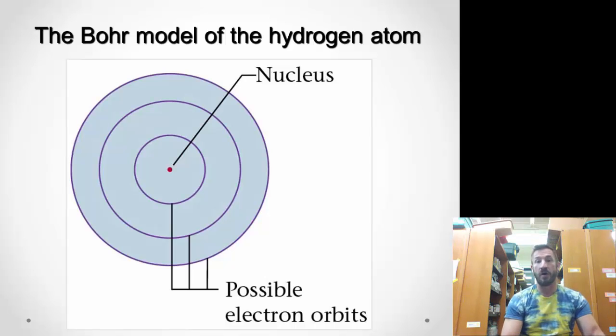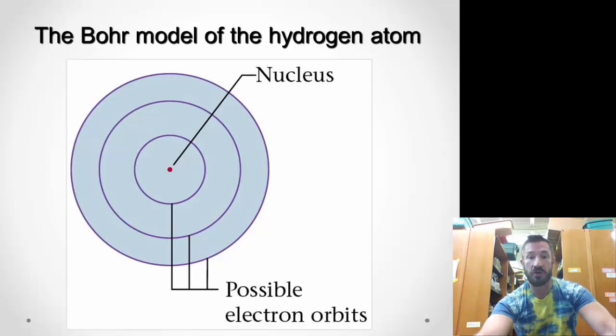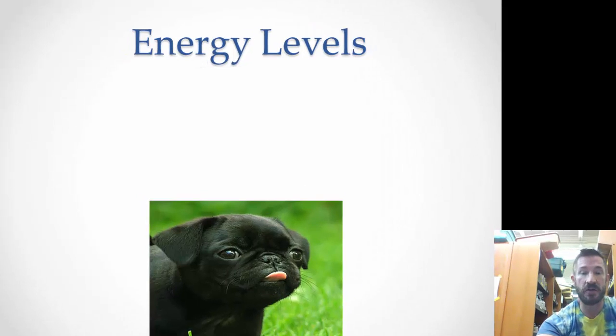Here is this Bohr model or planetary model of the atom. There's a nucleus, then the orbits around it are the possible places where electrons can be found. So we have energy levels.